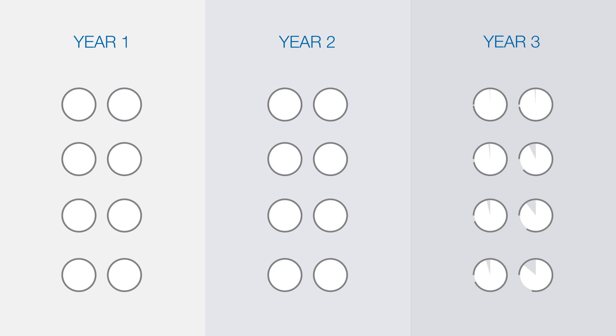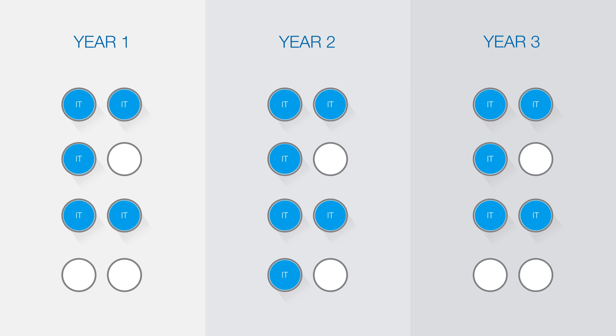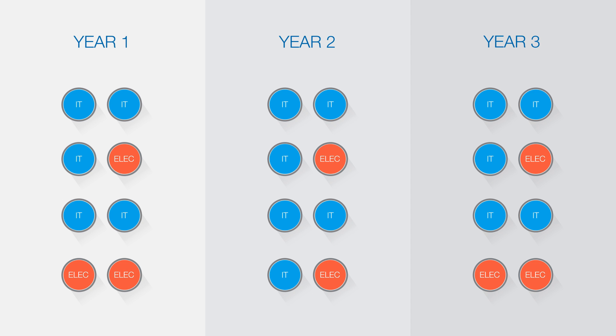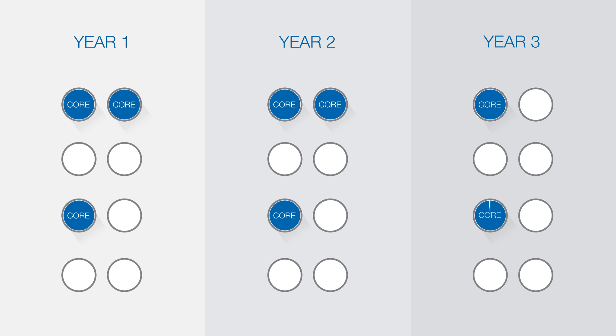The course is made up of 24 units. You must take 16 units, which is two thirds of the course, within the field of Information Technology. The remaining eight units are free electives you can take from any discipline, both within Information Technology and from other areas. Out of the 16 Information Technology units you need to take, eight are core units including a major project that runs over two semesters in your final year.